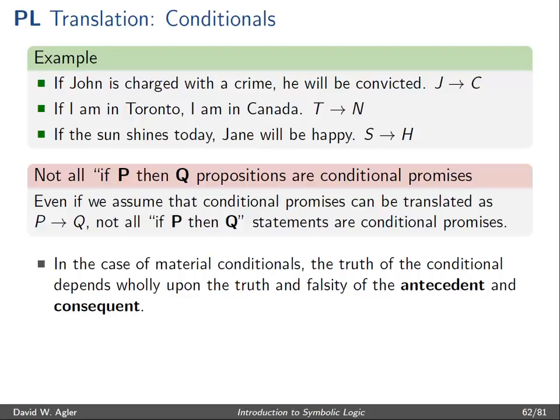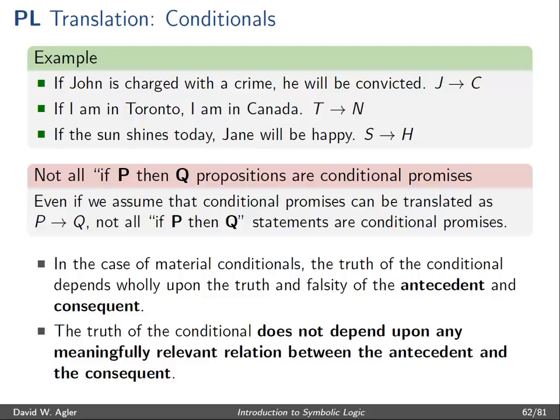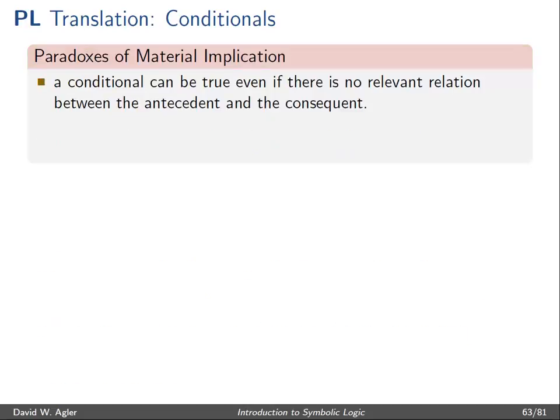In the case of the material conditional — a formula of the form P right-arrow Q — the truth of this conditional depends wholly upon the truth and falsity of the antecedent and consequent and the truth function for the right arrow. The key thing to note, however, is that the truth of this conditional does not depend upon any meaningfully relevant relationship between the antecedent and the consequent. In other words, P and Q need not have anything to do with each other in order for P right-arrow Q to be true.